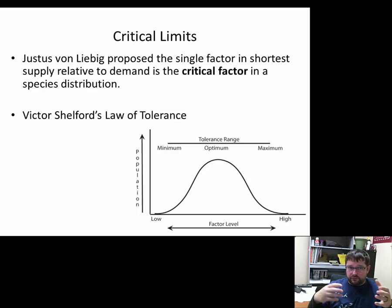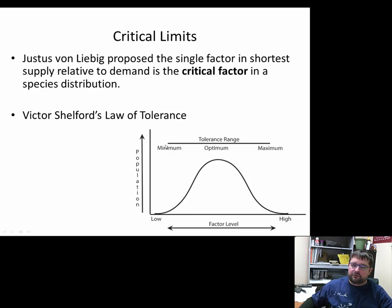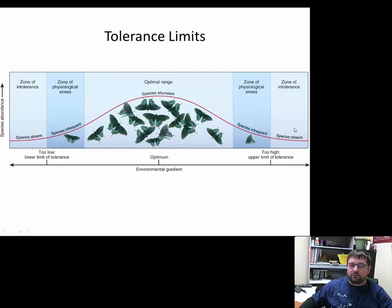From Justus's work, Victor Shelford's work built upon that and he developed what we often call the law of tolerance — that organisms will exist in a given region on a spectrum. You can see this tolerance range: the optimum range is where you're going to find the highest level of that population. If this is temperature, the closer you get to the maximum temperature for a given species, the fewer individuals you're going to find. Same thing on the opposite side — the closer you get to the minimum, the fewer individuals. This is the tolerance or optimal range of a given organism.